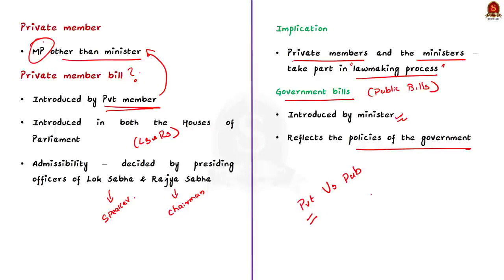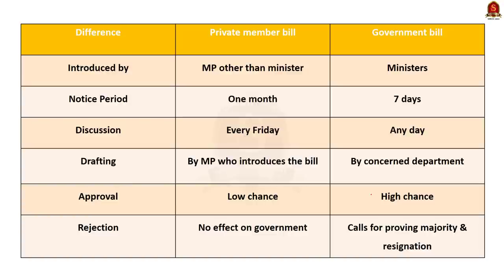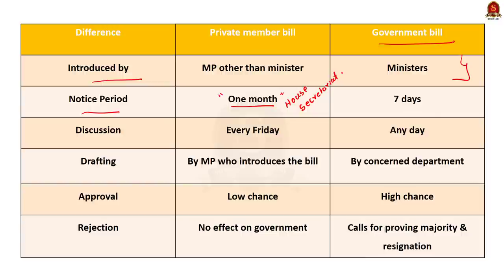Now let us see the differences between the government bill and the private member's bill. The first difference lies in who introduces the bill. The second major difference lies in the notice period for introduction. The MP who wants to introduce a private member's bill has to give at least one month's prior notice to the house secretariat, so that it can examine compliance with constitutional provisions and rules of legislation. But for a government bill, only seven days' notice is required.